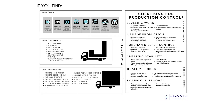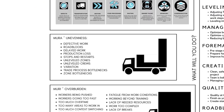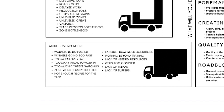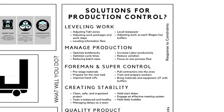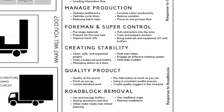On this sheet, we're always looking for waste, unevenness, and overburden. Each of these is bulleted out so you can specifically see if your crews are riddled with waste, interrupted by unevenness, or if the crew is overburdened. If you find that, over here to the right you'll see solutions for production control — leveling your work, managing production, implementing foreman and superintendent control, creating stability, installing a quality product, and removing roadblocks out ahead.